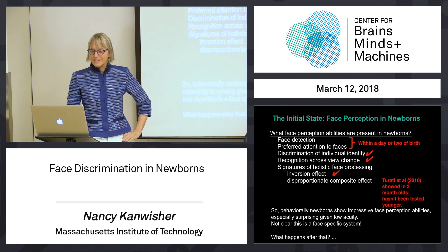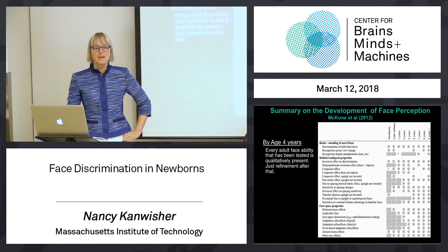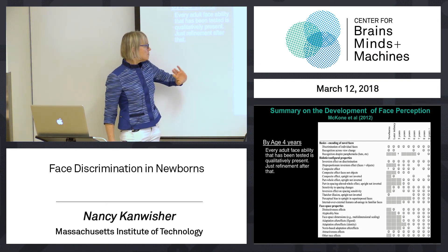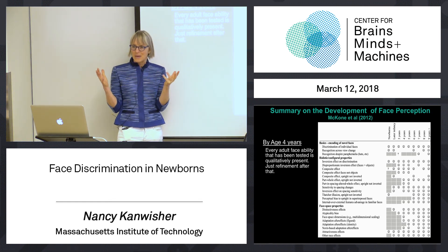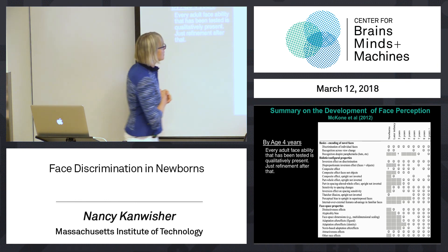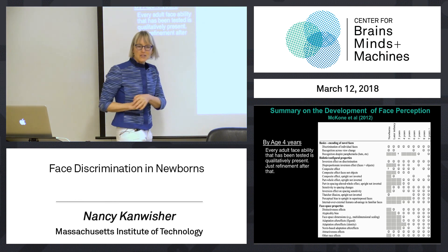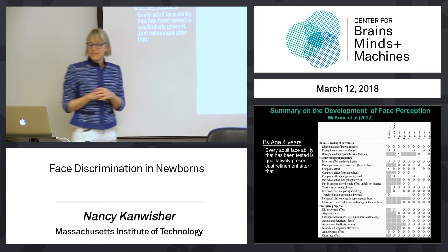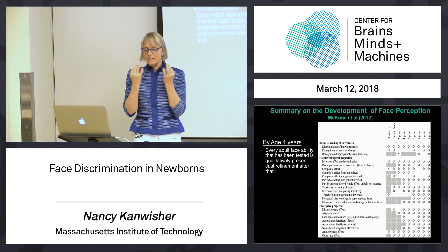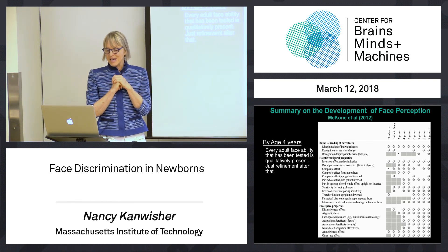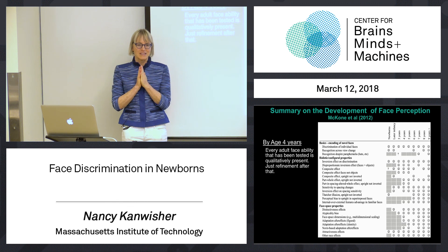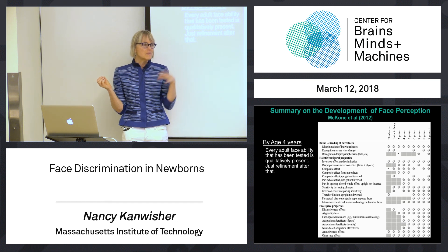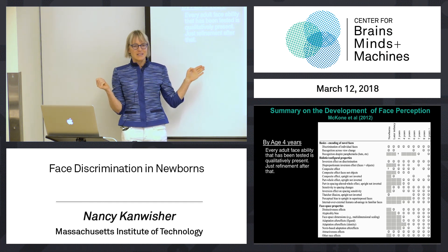What happens after that? I'm going to skip over some stuff very briefly and just say: many people have been doing this enterprise of asking which of these signature properties of the face system, measured behaviorally, are present at which age. This is a big table across lots of studies — all different kinds of signatures of the face system across ages. But the simple statement is that every kind of qualitative hallmark of the face system that has been tested is present in infants and young kids at the earliest age it has ever been tested. That's always by age four, but many of them are present as early as the first day of life.